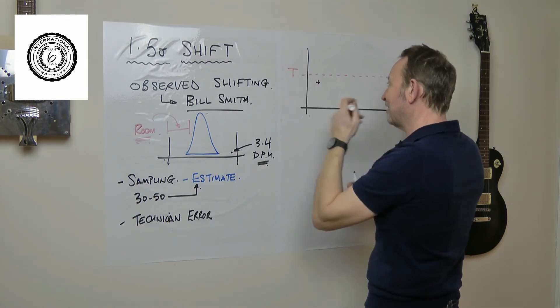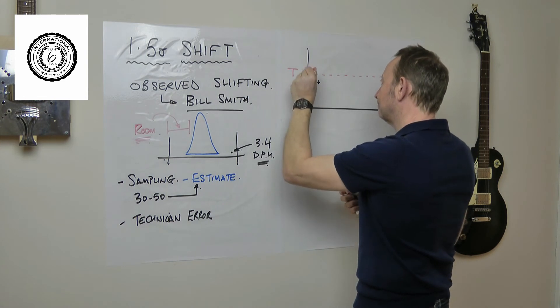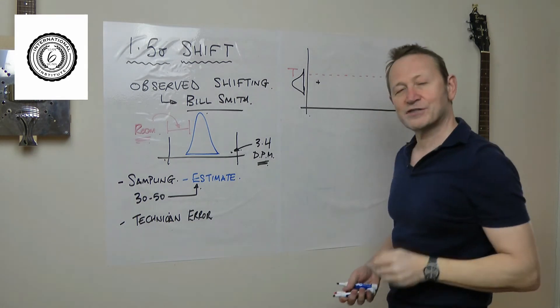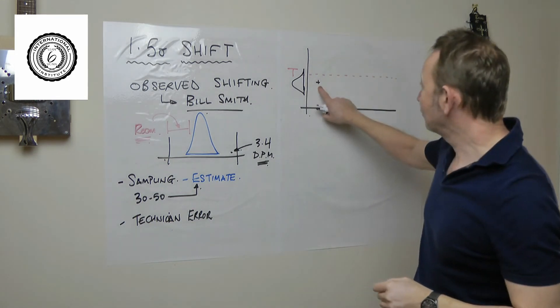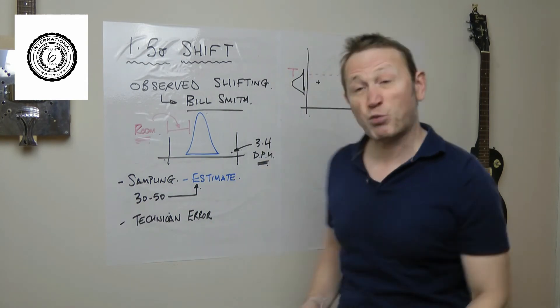What they do of course is they never see this shape. They see one data point at a time. So they start the machine, they get a data point. Now let's assume by the way this is the target here, so the red line is the target, the nominal that they're trying to hit. Now let's assume the process is off center, it's sitting there. Got one data point there. Does that tell him that?